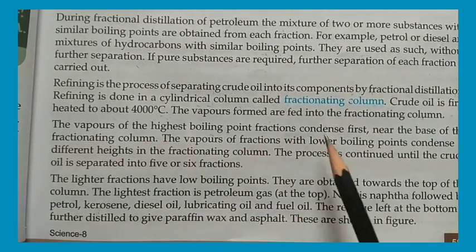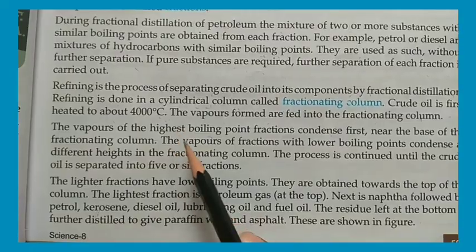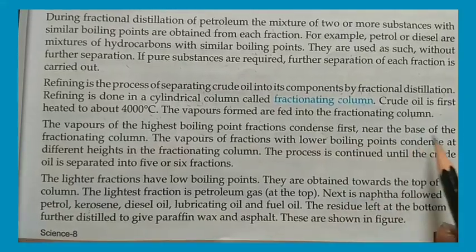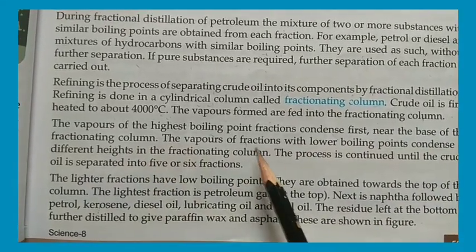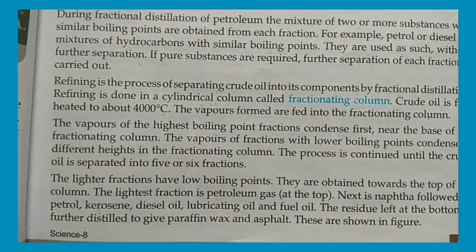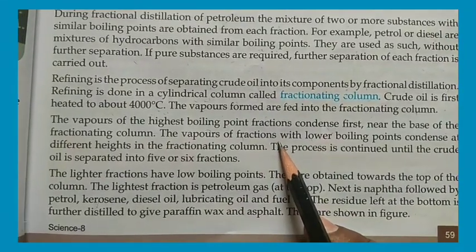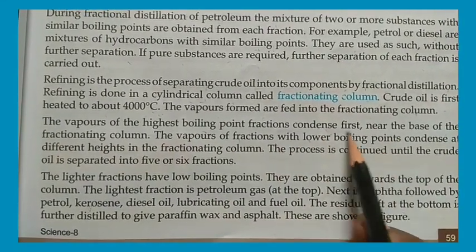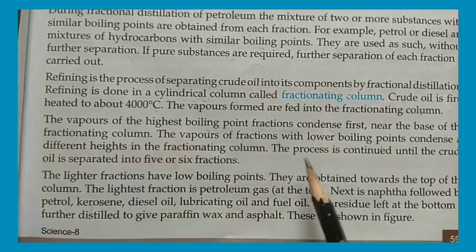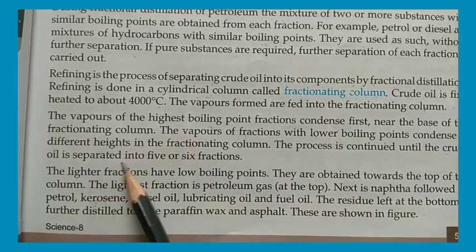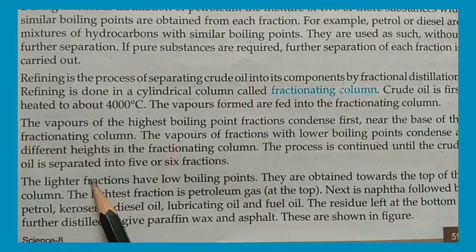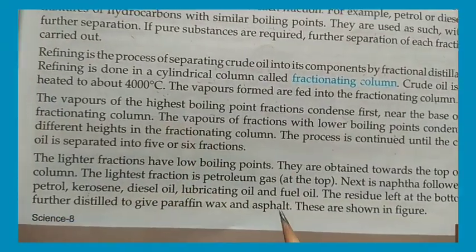The vapors with the highest boiling point condense first near the base of the fractionating column. Vapors with lower boiling points condense at different heights of the fractionating column. This process continues until the crude oil is separated into five or six fractions.